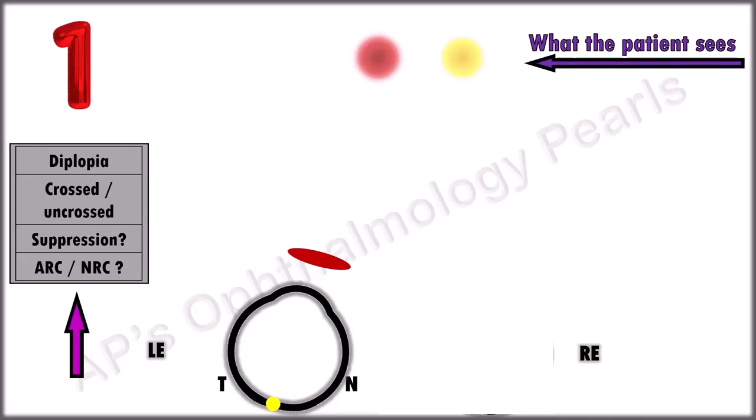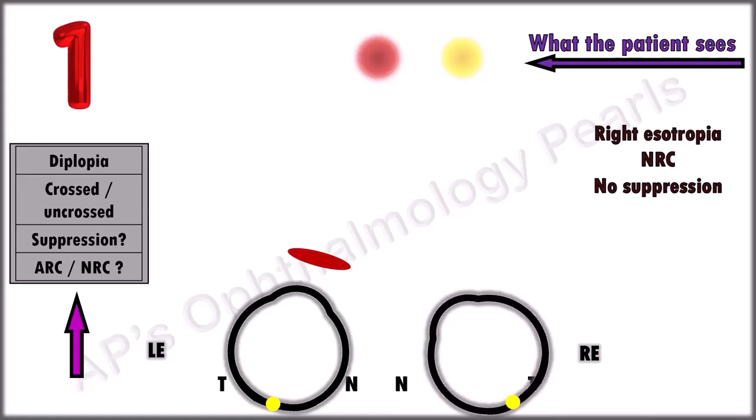Suppression, no, obviously, because there is diplopia. Regarding the type of retinal correspondence, this is normal retinal correspondence. So this is a right esotropia with normal retinal correspondence and absence of suppression.